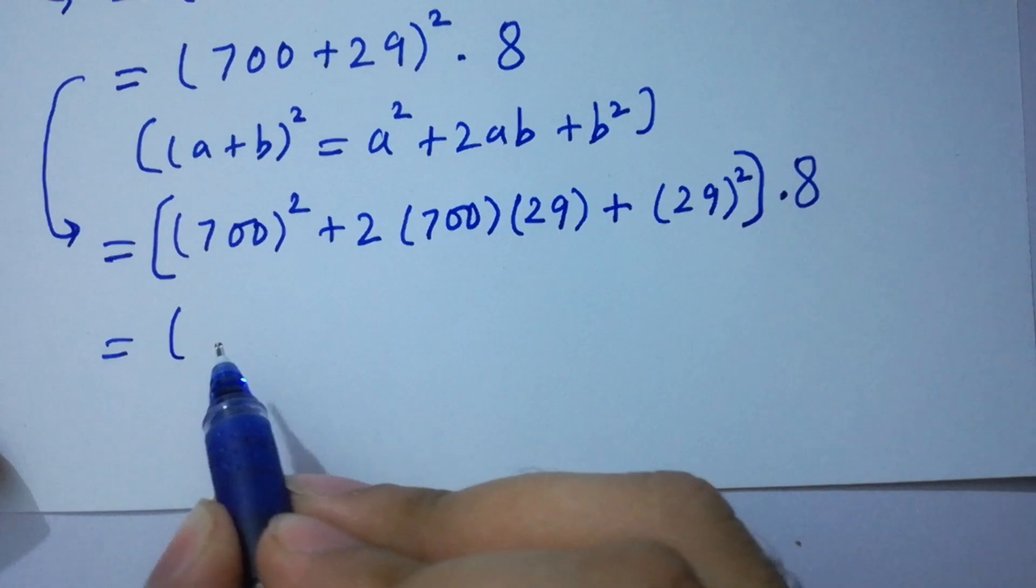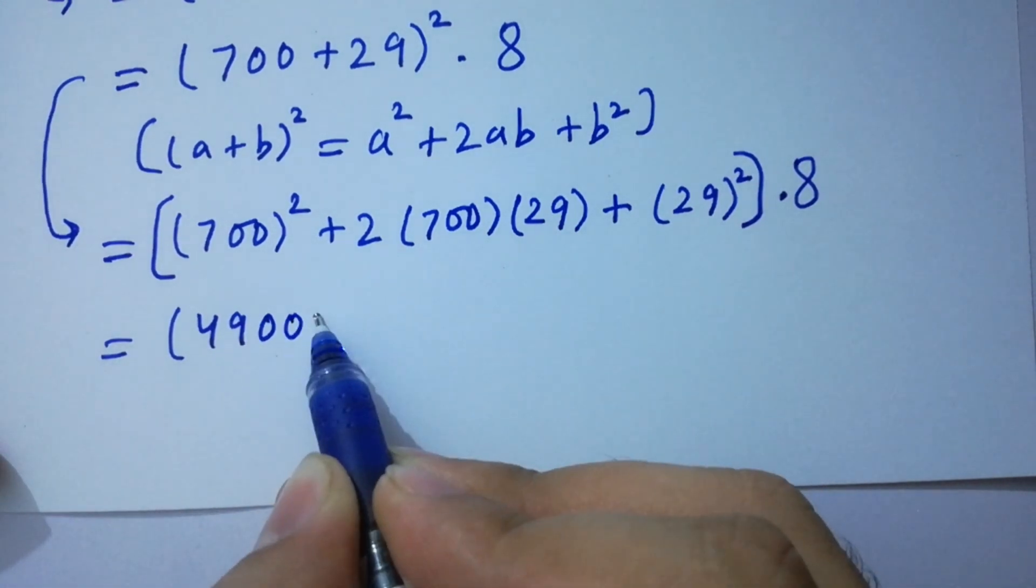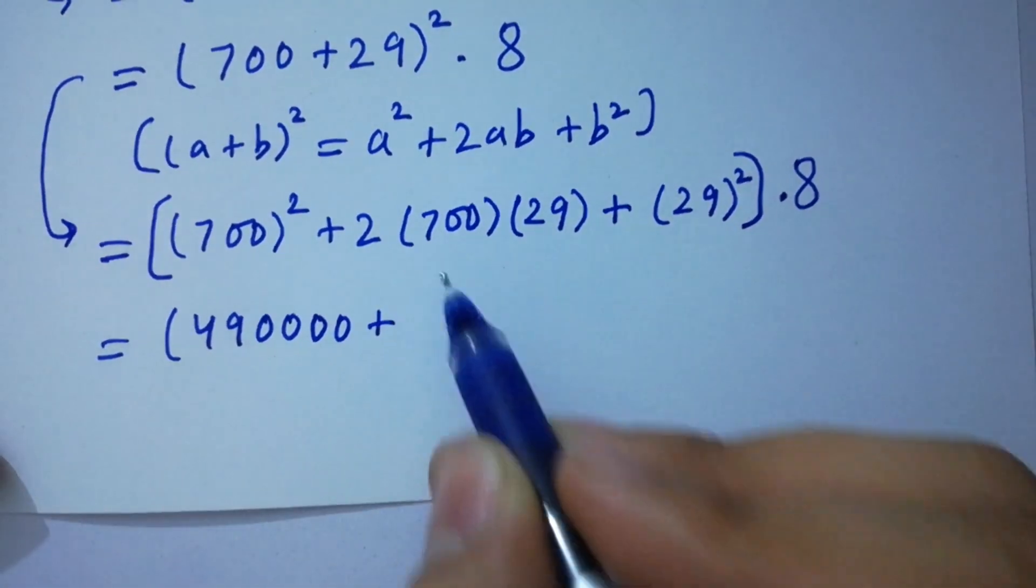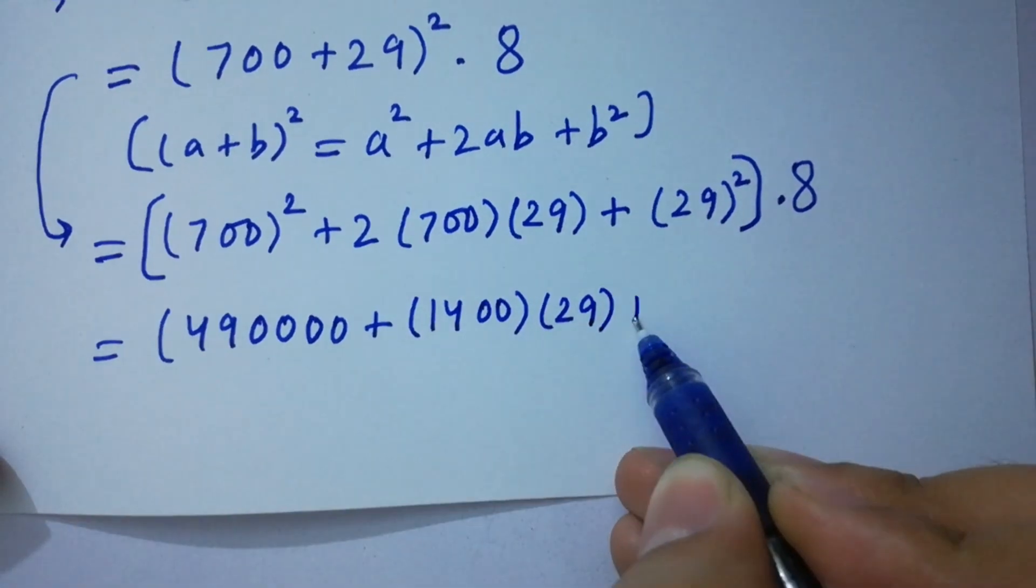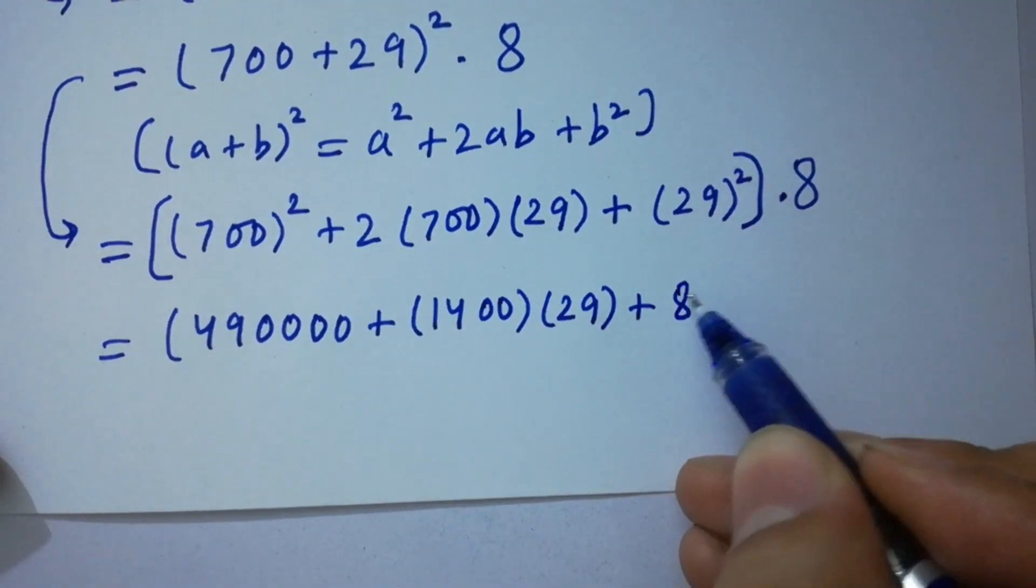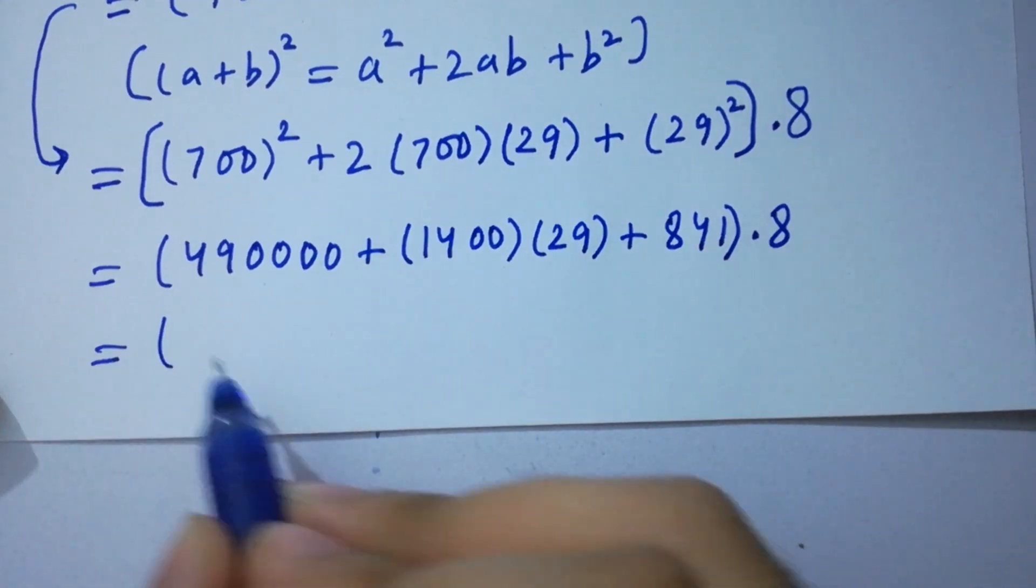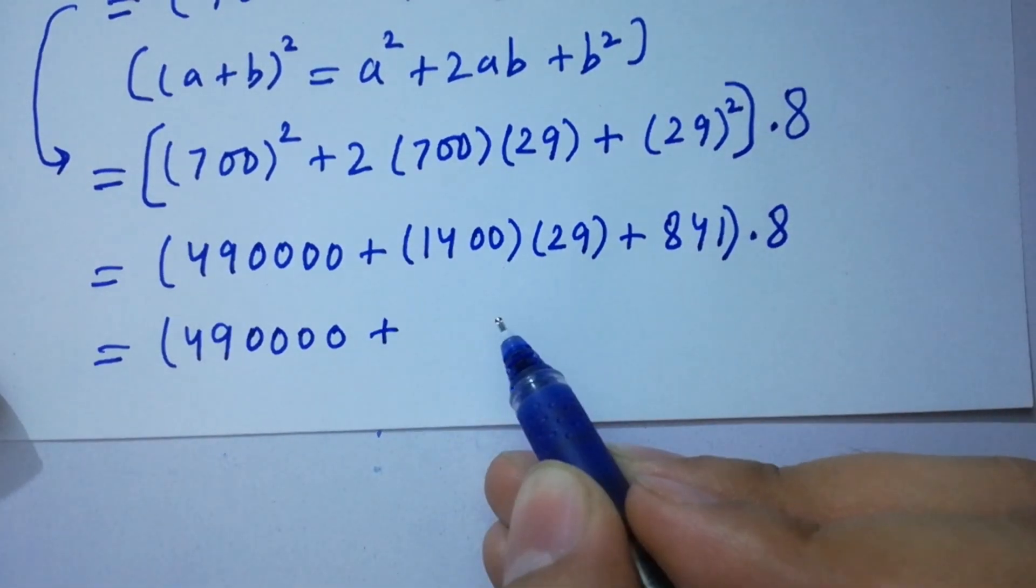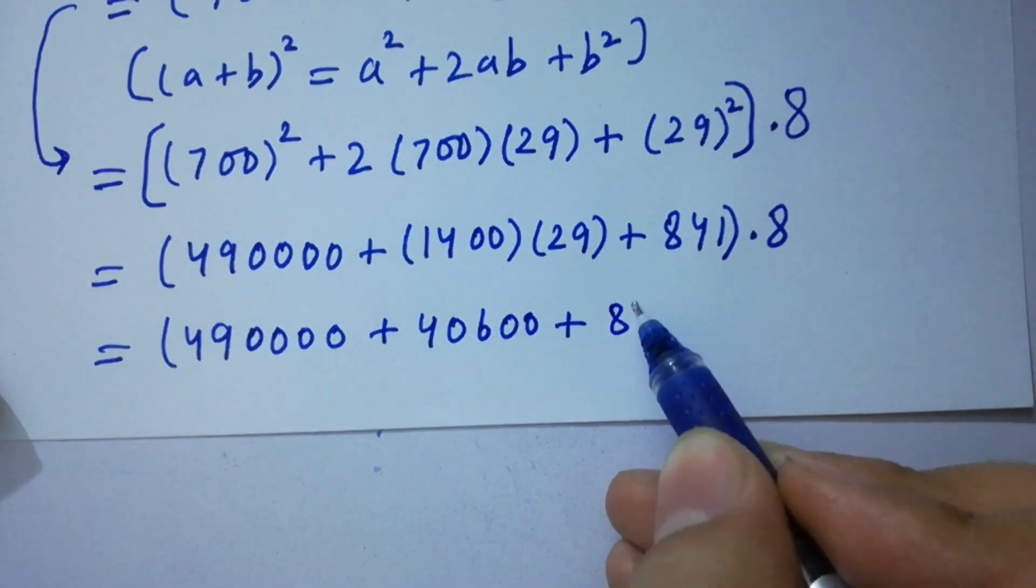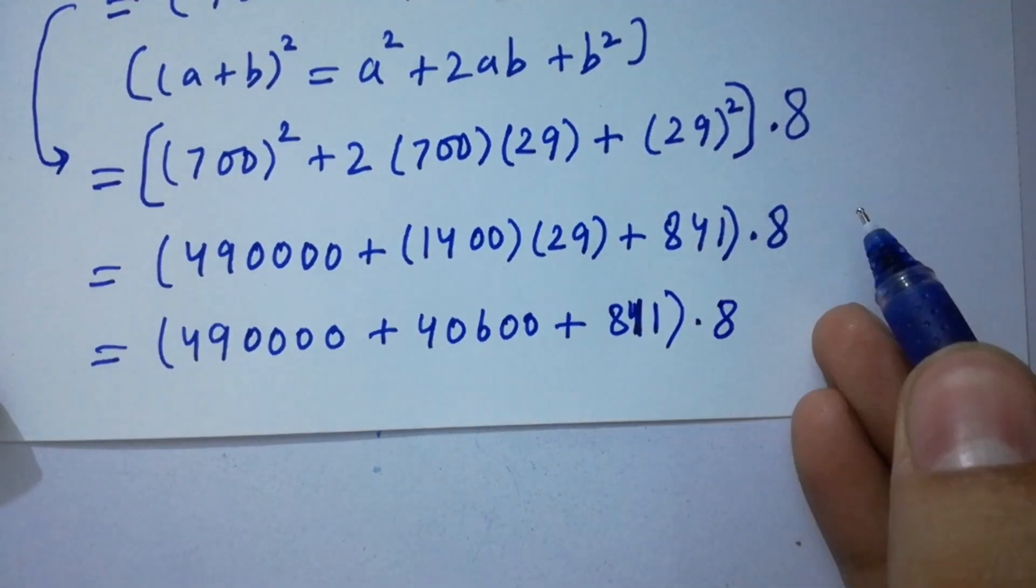700 times 700 is 490000, plus 2 times 700 times 29 which is 40600, plus 29 times 29 which is 841, times 8.